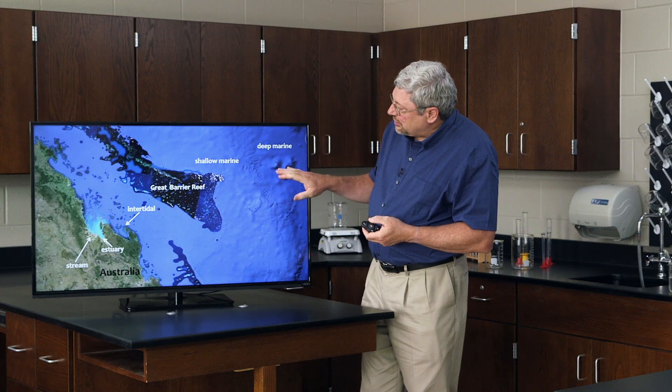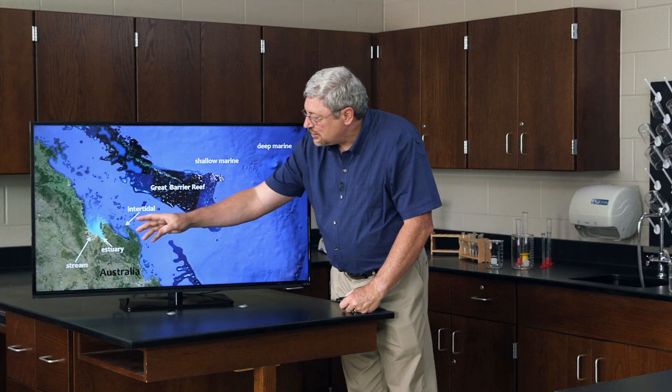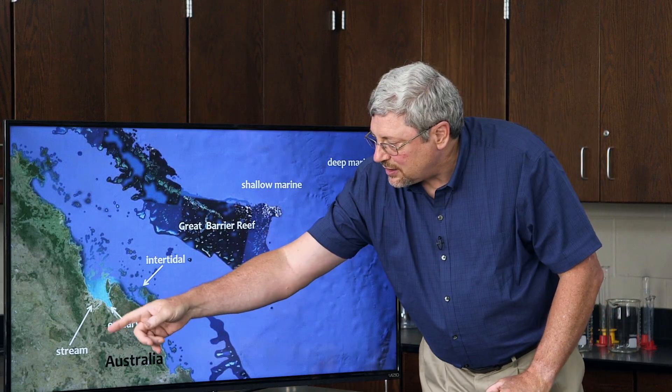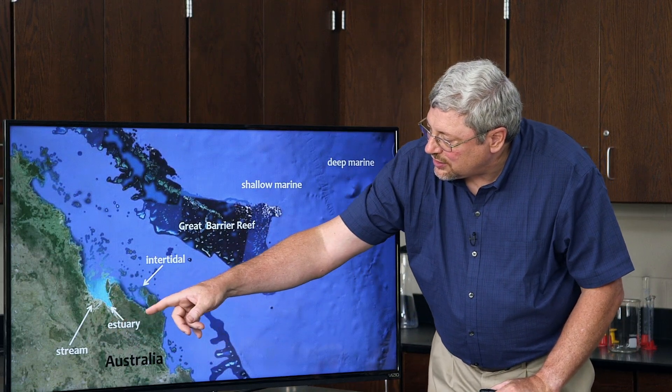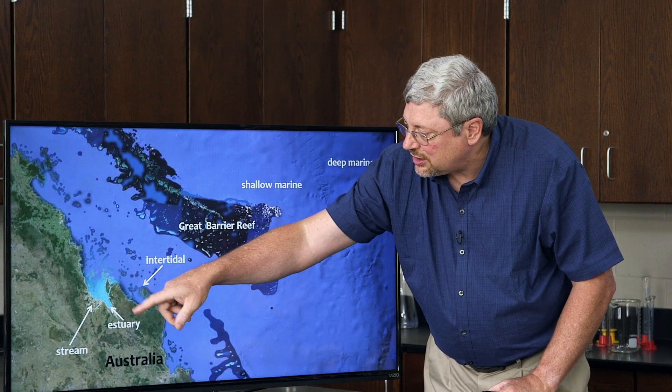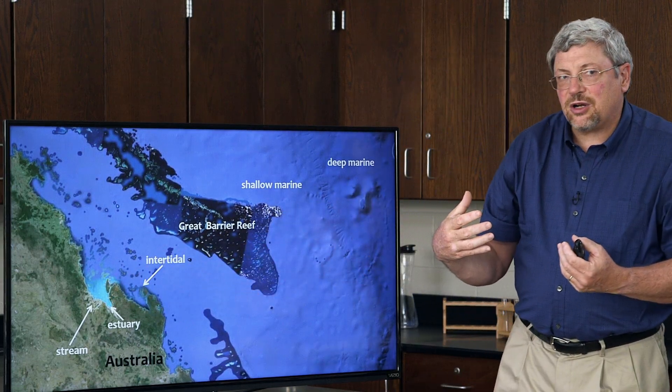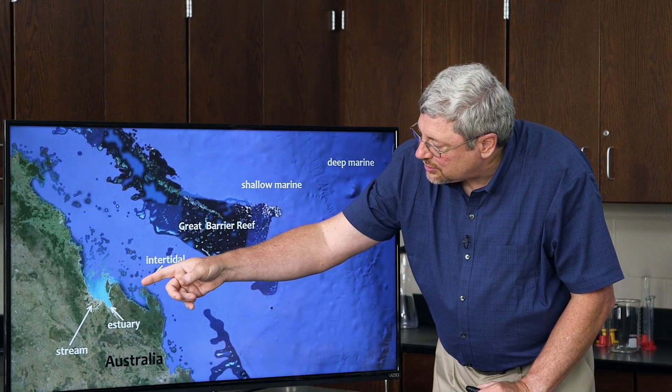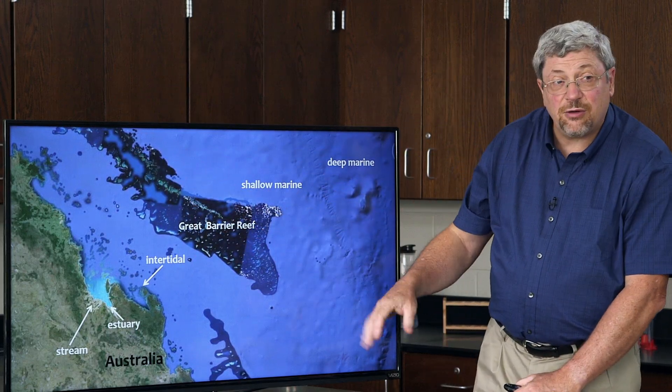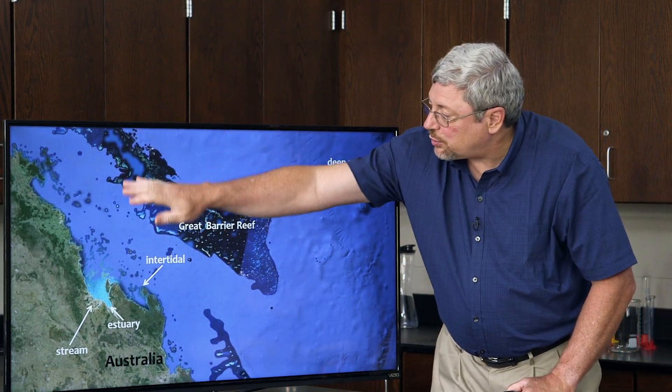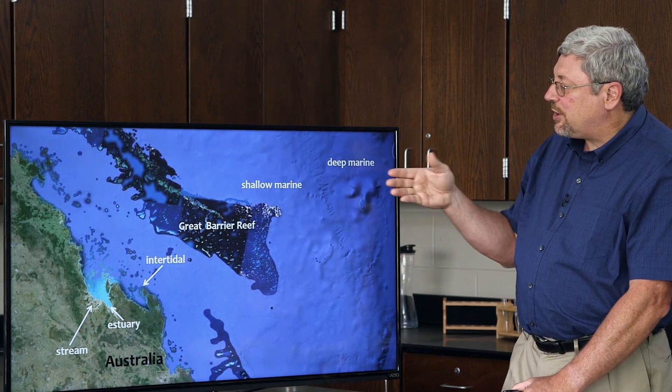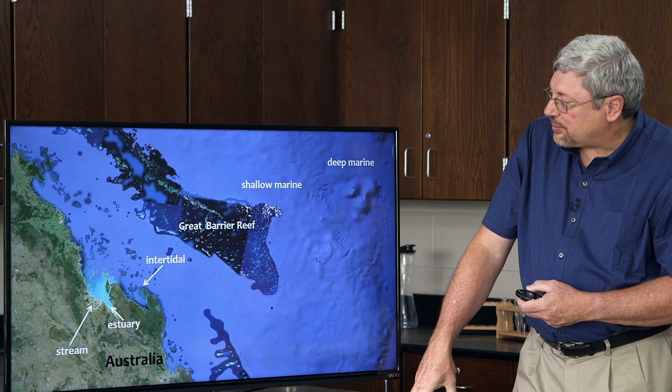Here we have a satellite photo showing several of the biomes we've just talked about, the water biomes. Starting on the land of Australia here, we can see some of the streams that are flowing towards the ocean. Then in the place where the stream water mixes with the ocean water, showing up as a bluish color, these are the estuaries where fresh and salt water are being mixed. Then near the shore, you'll find the intertidal zone. And if you go out away from shore, you have a huge coral reef here, the Great Barrier Reef, the largest coral reef in the world. The area around the coral reef is shallow marine. And then there's a cliff that gets into very deep water, where you have the deep marine region off to the upper right.